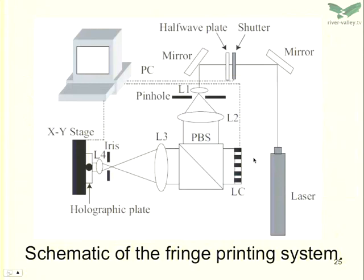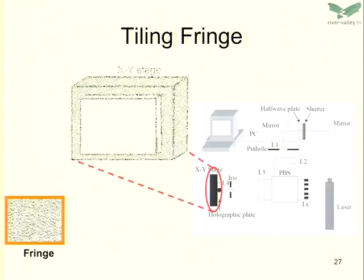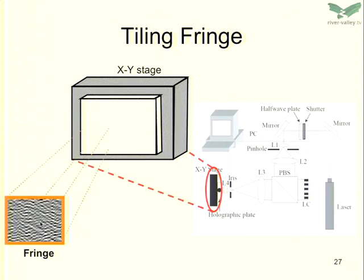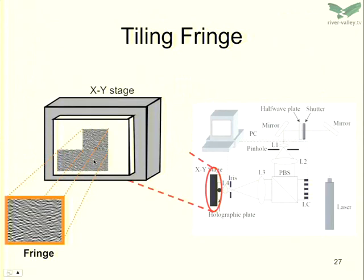Our system uses a liquid crystal. Here is the laser illuminating the liquid crystal, then two lenses demagnify the image of the liquid crystal and expose it on the holographic plate. Here is how it works: the fringe is demagnified onto the plate, exposed, then the stage moves for the next exposure. This way we can make a large hologram from small elementary holograms.